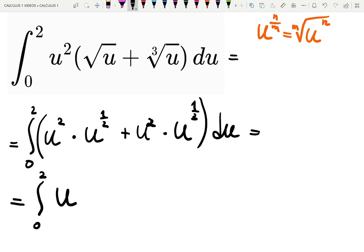2 plus one-half is 4 over 2 plus 1 over 2, which is 5 over 2, plus 2 plus one-third, this is one-third, is 3 times 2, 6 over 3 plus 1 over 3. That is 7 over 3. And don't forget du.